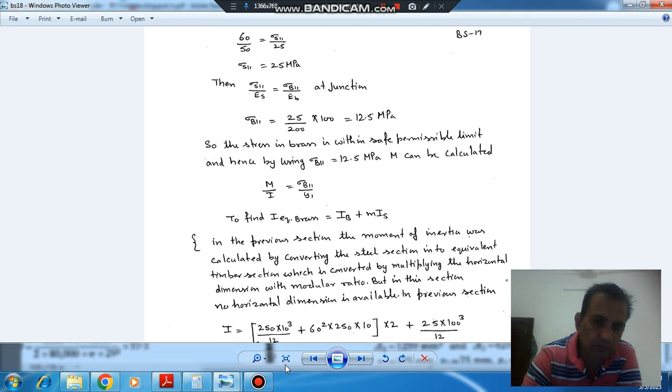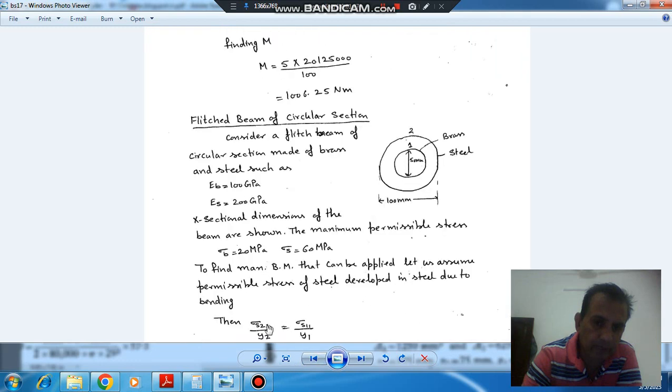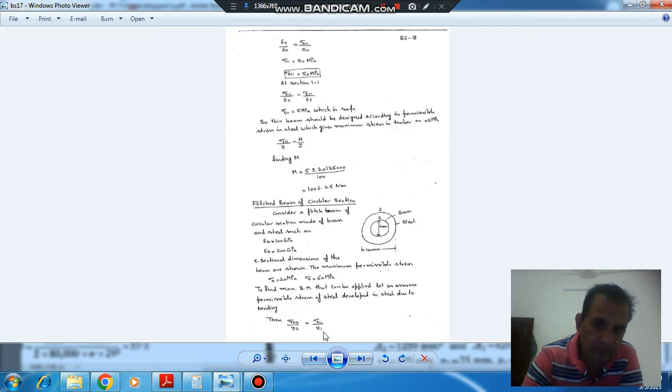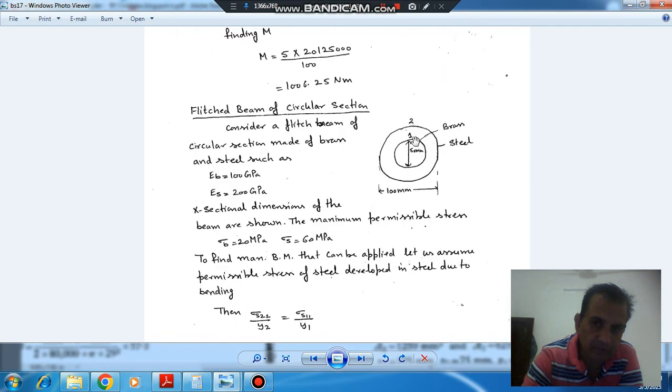Okay, so at 2-2, suppose we are taking the maximum stress for steel that is 60 MPa. Because here the maximum stress will be equal to 60 MPa. So this is 60 divided by 50, y is equal to 50 because diameter is 100, so y is equal to 50.